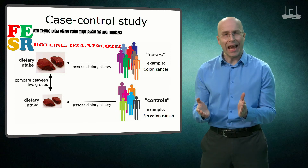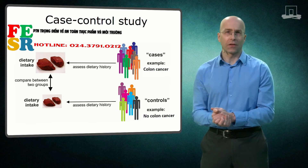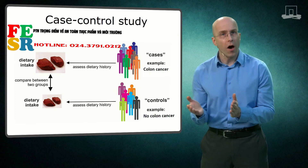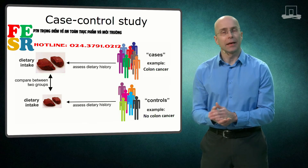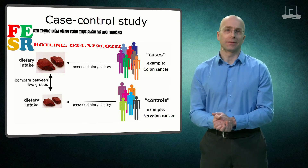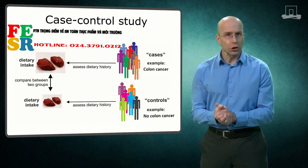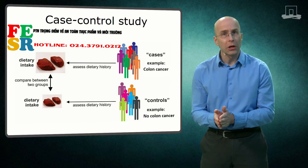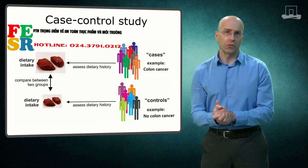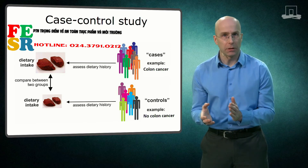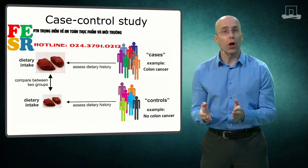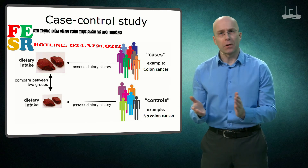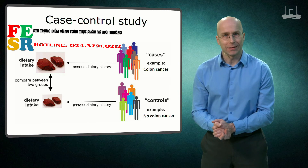In this study, any known risk factor for colon cancer can be a potential confounder of the relationship between meat intake and colon cancer. What researchers do is apply computational tools to limit the influence of confounding as much as possible — this is called adjustment for confounding. However, some confounding always remains.